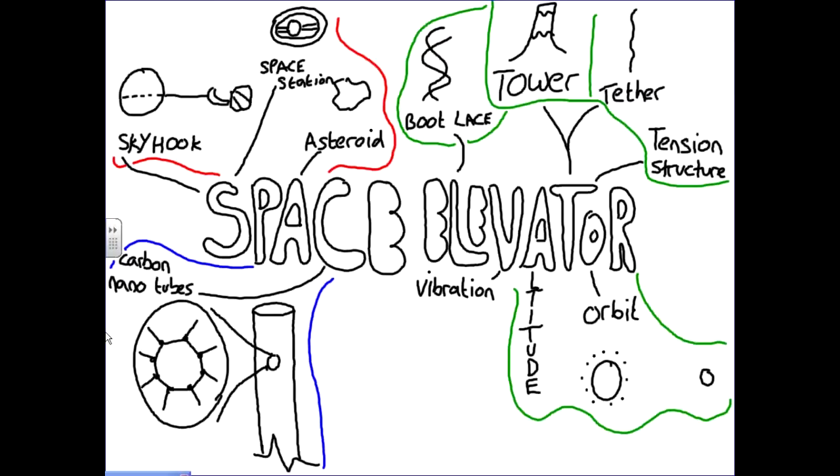For that we draw a schematic diagram of the arrangement. We have the Earth at the bottom and then the tether going up with the skyhook on top. At the surface of the Earth, the wind speed is zero and from there on it increases in a parabolic fashion.